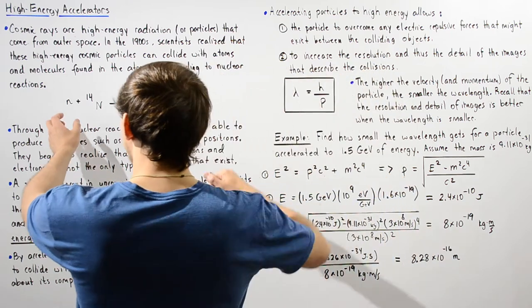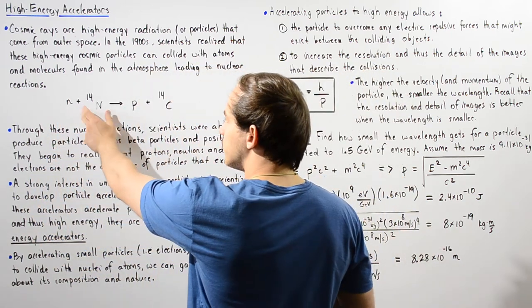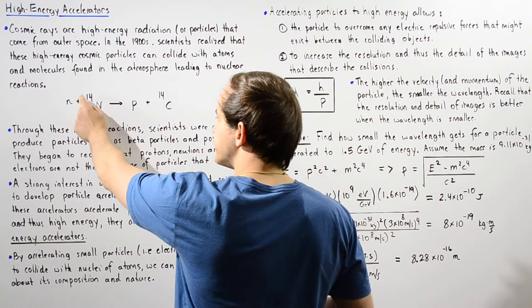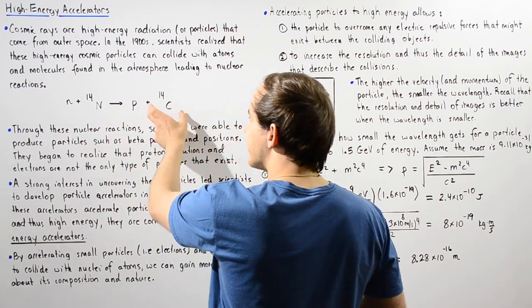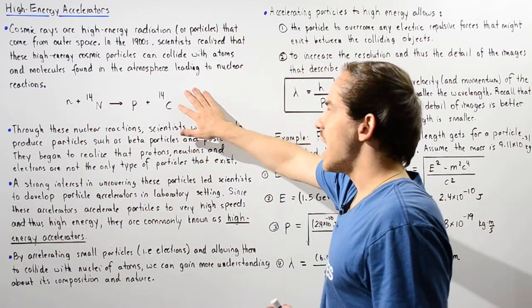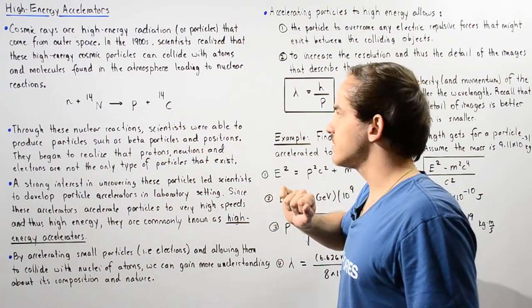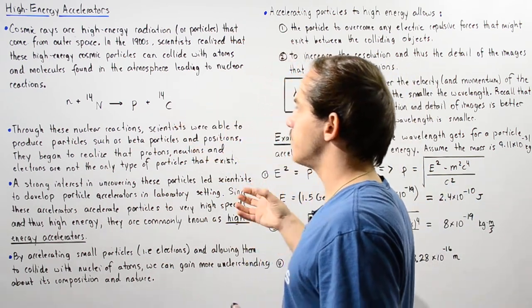For example, if we have the following particle collide with our nitrogen-14 isotope, it releases a proton as well as produces our carbon-14 isotope, which is a very unstable isotope.